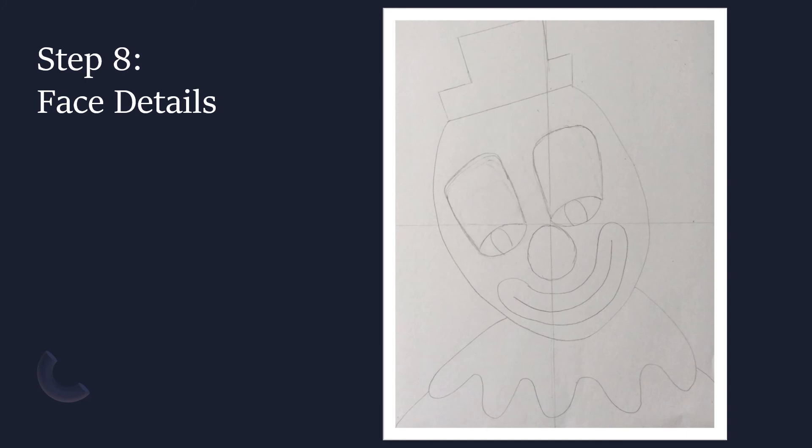Step eight: now draw a line around your smile or frown to create large lips for your clown. Also go ahead and draw a good-size circle in between your eyes and lips to create your classic clown nose.